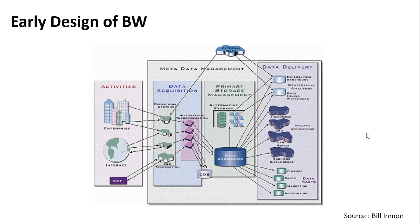In this section we will be discussing the architecture of BW for HANA. But before that, let's see what the early design of BW looked like. This is a very famous design from Bill for the basic BW architecture, which says that you get the data from various sources, you acquire the data, then you store the data, and then you deliver the data. The basic idea is to divide your data into multiple categories, clean the data, and make it available for analysis.